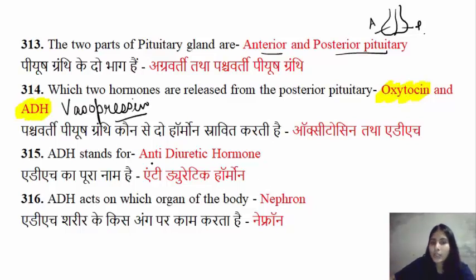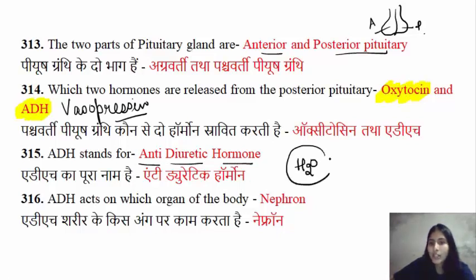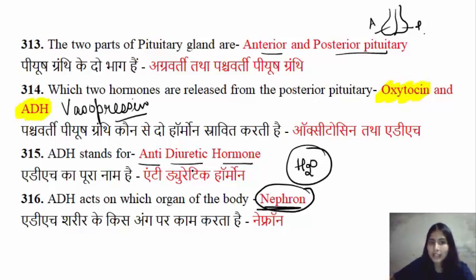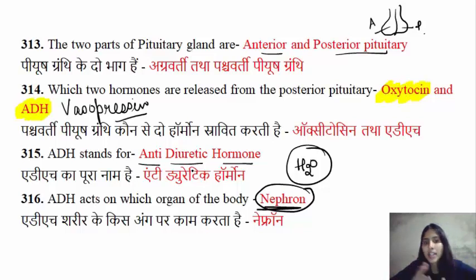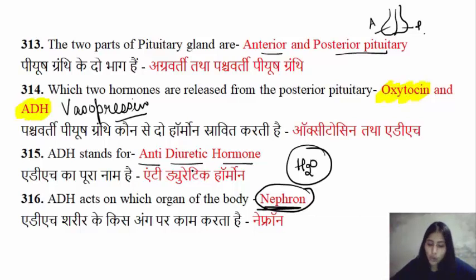ADH is your anti-diuretic hormone. When you have a deficiency of water in your body, it acts on your kidneys — specifically the nephron — and absorbs the excess water back into the body. So it works against diuresis, which is why it is called anti-diuretic hormone.